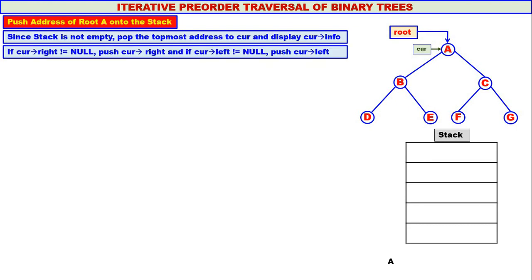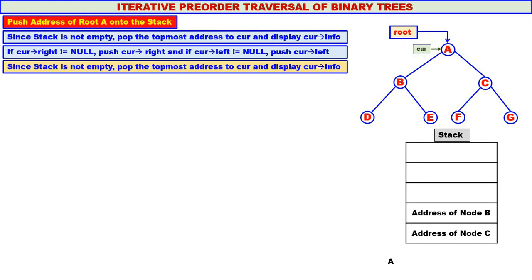Curr's right is not equal to null — it is the address of node C — so it is pushed onto the stack. Curr's left is not equal to null — it is the address of node B — so it is also pushed onto the stack. The stack is not empty, so we pop the topmost address — node B — to curr, and B is displayed.